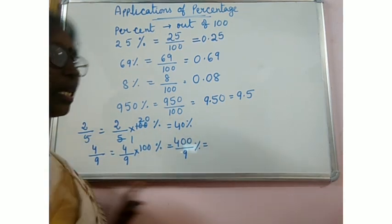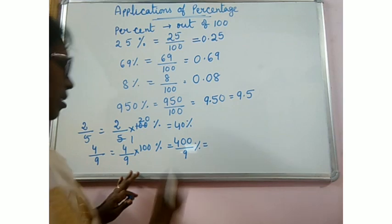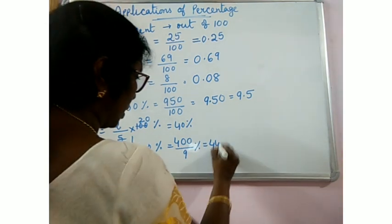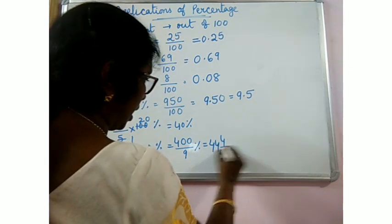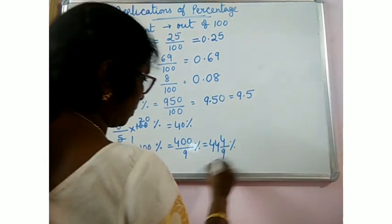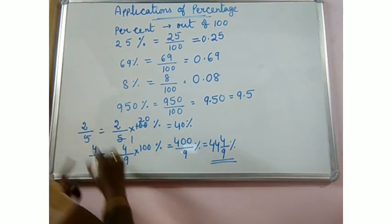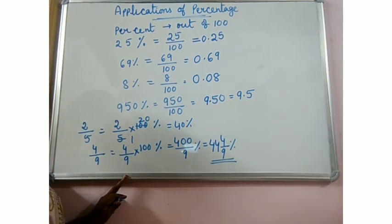Whenever you get the answer improper, convert it to mixed. 9 for the 36, 40, 9 for the 36, we gain 4 left out. So, if you want to convert fractions to percentage, multiply by 100%.